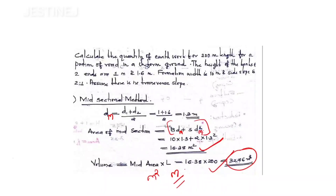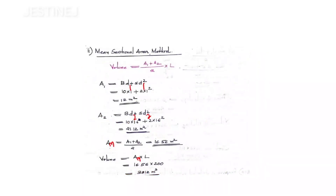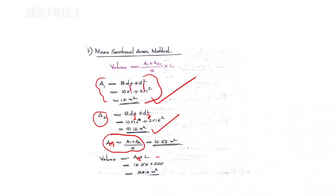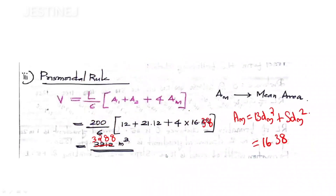Using the mean sectional area method: A1 (using d1) = 12 m², A2 (using d2 = 1.6 m) = 21.12 m². Average area = (A1 + A2) / 2. Total volume = average area × 200 = 3312 m³.